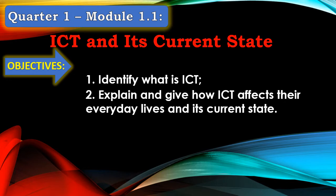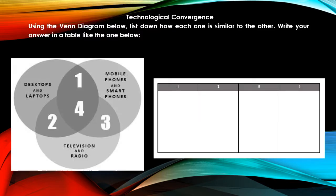ICT and its current state — Objectives: 1. Identify what is ICT. 2. Explain and give how ICT affects their everyday lives and its current state. Using the Venn diagram below, list down how each one is similar to the other, and write your answer in a table like the one below. Technological convergence.